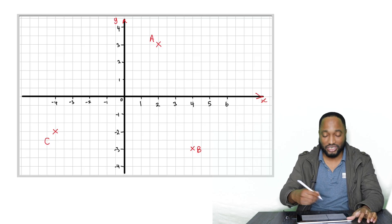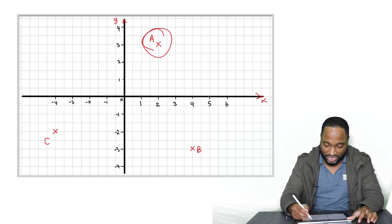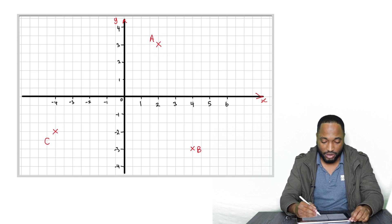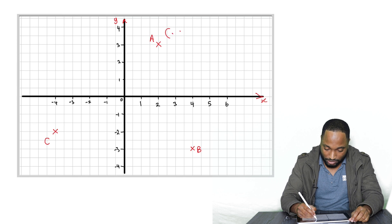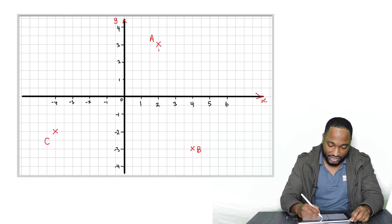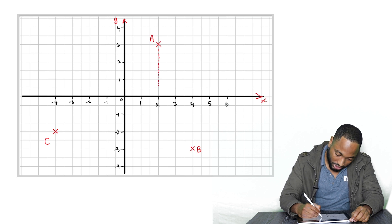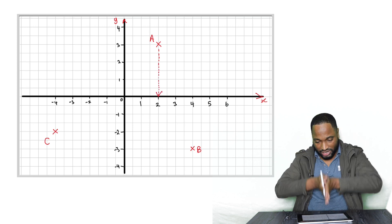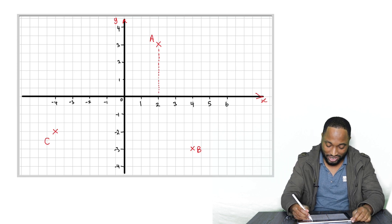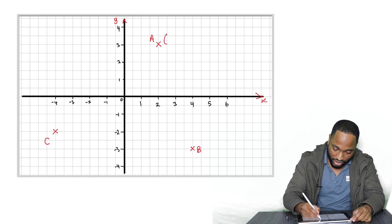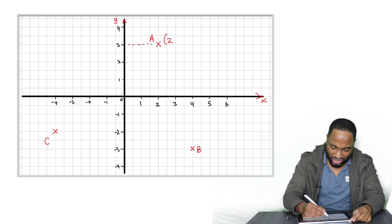The first thing that you need to always look out for when you're trying to state the coordinates of a point—the coordinates are like the two numbers there—is that the x-axis comes first. So this lines up with the two, so you're gonna put the number two here first, and this lines up with the three.